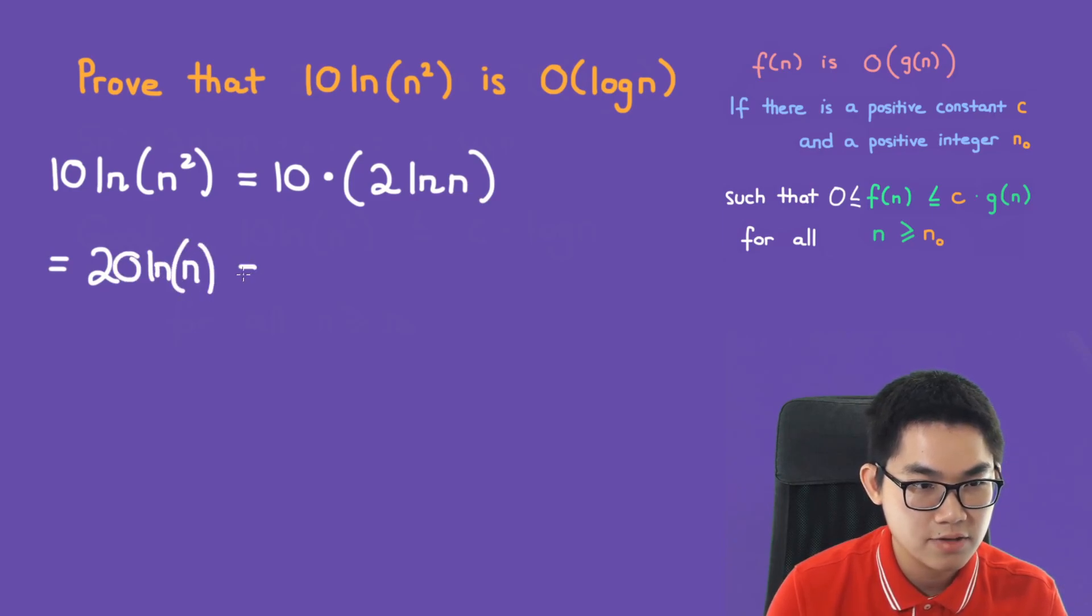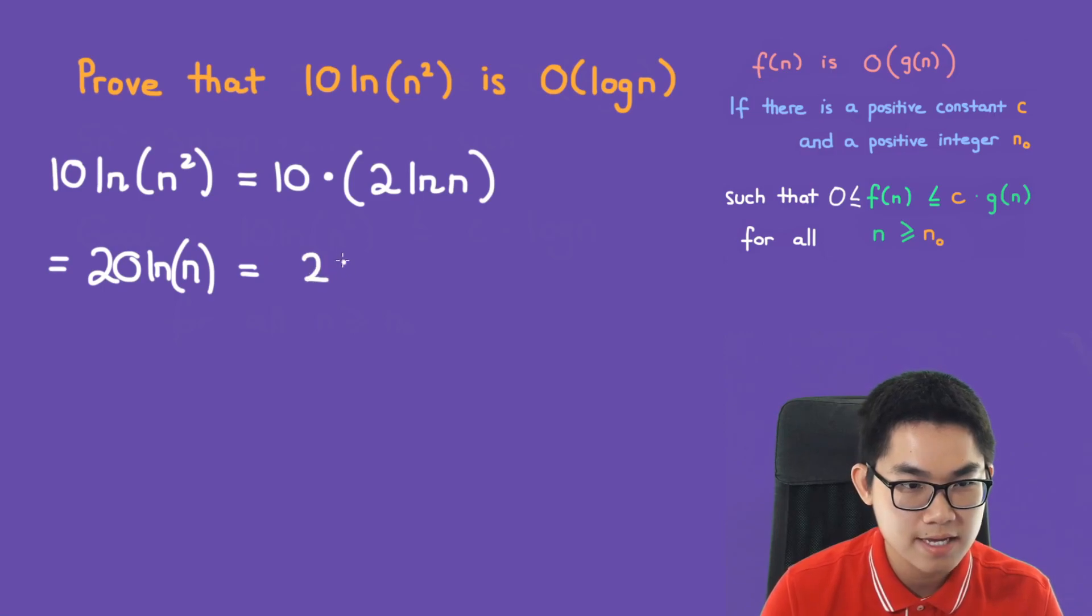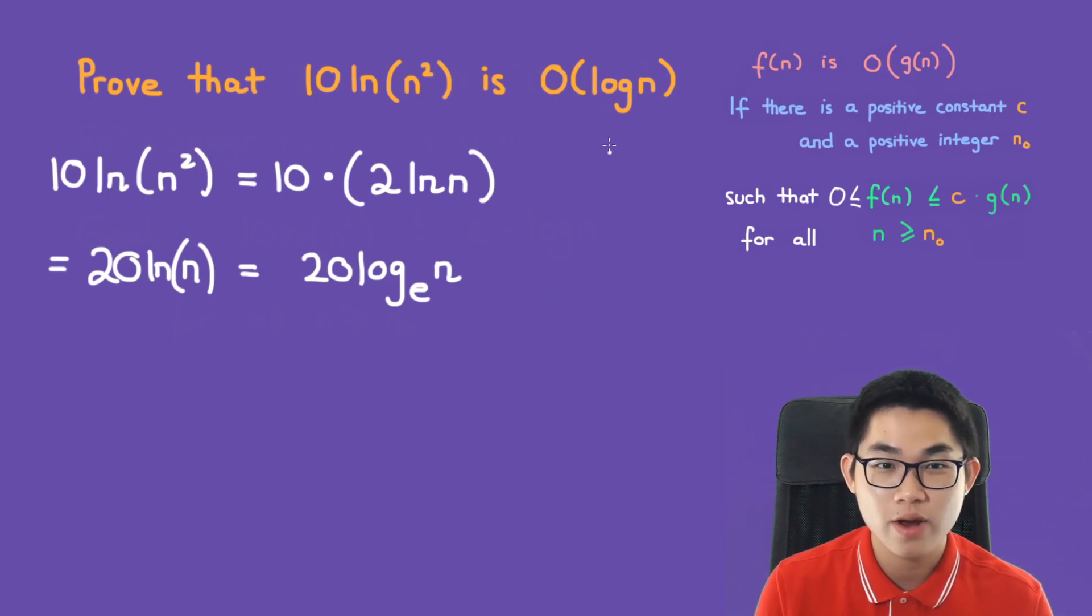So the ln is really just log base e. So 20 log base e of n. And in computer science, whenever we say O of log n, we mean base 2. So we can convert the e into a 2.